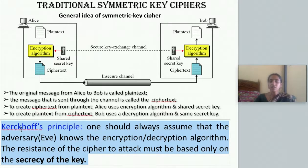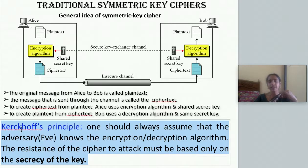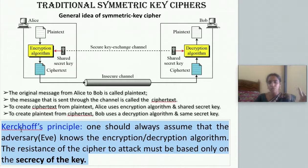There is an important principle called Kerckhoffs' principle, also called Kerckhoffs' law. You should not assume that your cryptographic system is secure. In this system we saw five components: plain text, cipher text, encryption method, decryption method, and key. All four components except the key — that is, plain text, cipher text, encryption algorithm, and decryption algorithm — are available to everyone, including adversaries and third parties. The strength and security of the cryptographic system lies only in the secret key. This is Kerckhoffs' principle.